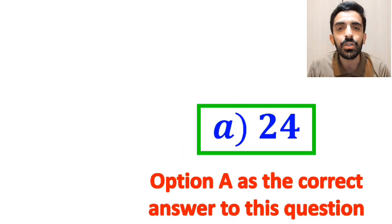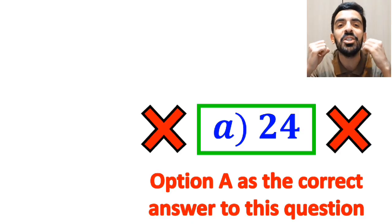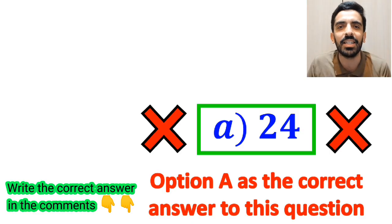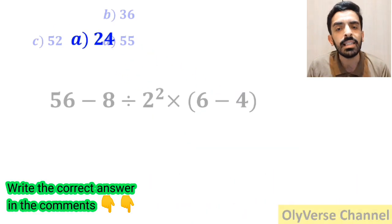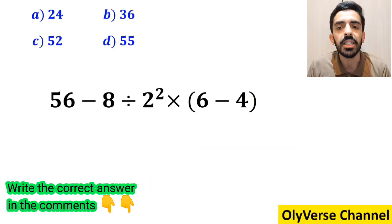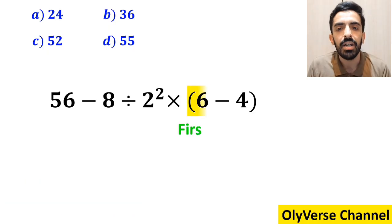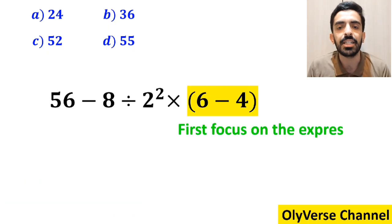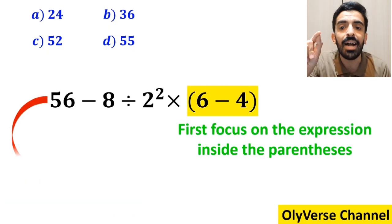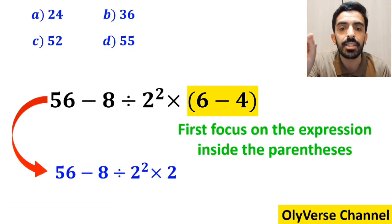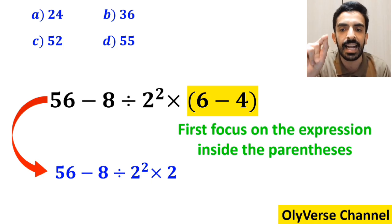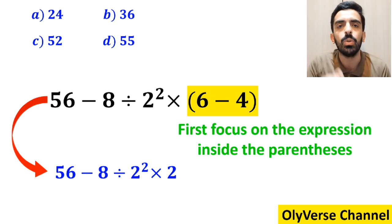But I have to say, we were tricked, and it's not the correct answer to this question. Also, some other people, when solving this question, first focus on the expression in parenthesis, and replace the whole expression with 56 minus 8 divided by 2 squared, then times 2.